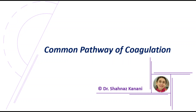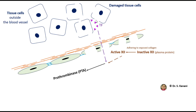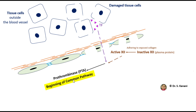The common pathway of coagulation starts when we have the product of the extrinsic pathway or intrinsic pathway. Both pathways give us the same product, which is prothrombinase. The reason we call it the common pathway is because it doesn't matter if we get prothrombinase through the extrinsic or intrinsic pathway — what happens next is the same.